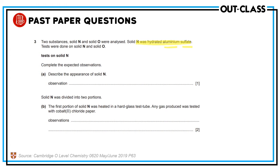Test on solid N: complete the expected observation. Describe the appearance of solid N. Look at the compound — it's aluminum sulfate. It's not a transition metal salt, so it would be white in color — white solid. If it's an aqueous solution, it's a colorless solution.